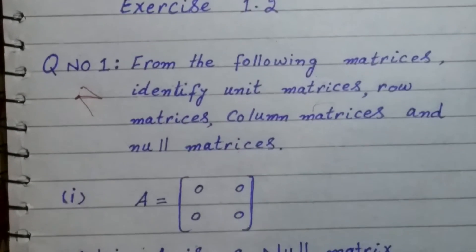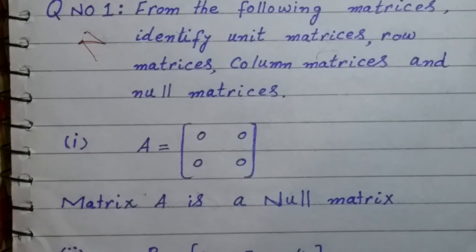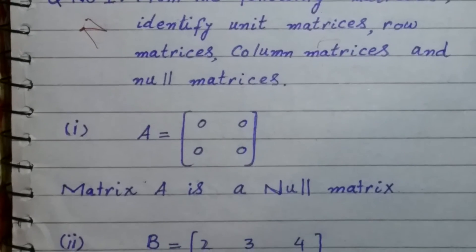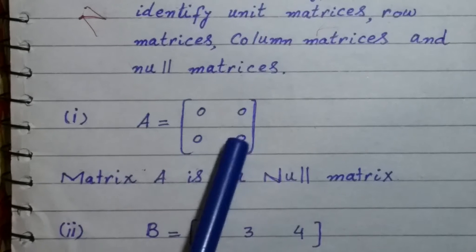This means from all the matrices given below, we need to see which category these matrices belong to. The first matrix in front of us is named A. In this matrix, all elements are zero.